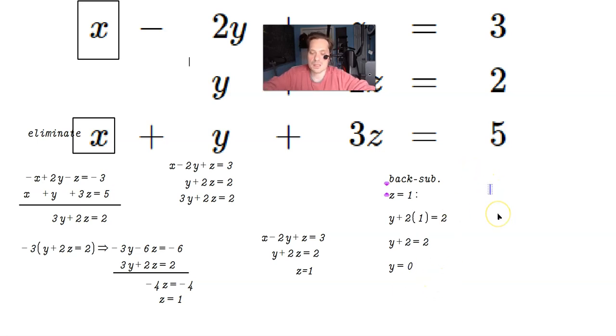Now that we know that z is 1 and we know that y is 0, then find x by plugging those values into the topmost equation, which is x minus 2 times the value of y, which is 0, plus the value of z. I'm using the top equation: x minus 2y plus z equals 3. So x minus 2 times 0 plus 1 equals 3.